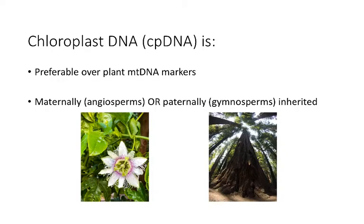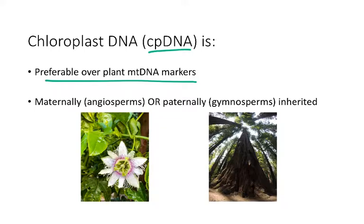Moving on to chloroplast DNA — if you're a plant, you also have chloroplast DNA, abbreviated cpDNA. In general, using cpDNA is preferable over mitochondrial DNA markers in plants, because plant mitochondrial DNA is actually very conserved — very similar across different individuals of the same species. When picking a marker, you want some variability, meaning nucleotide differences between individuals. If everything is exactly the same, the marker can't give you useful information. So chloroplast DNA is preferable when working with plants.